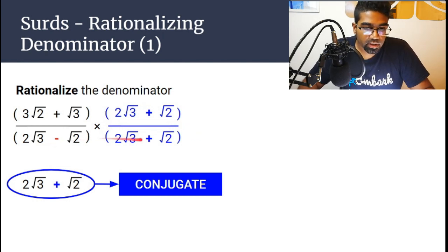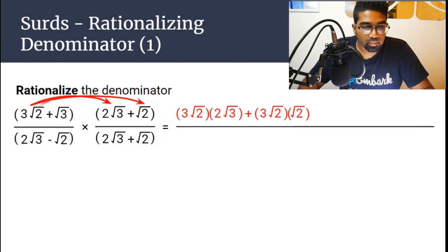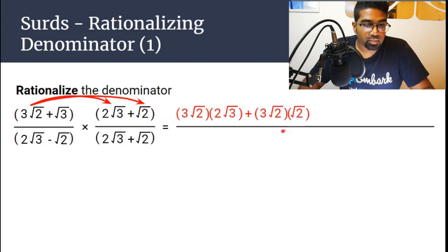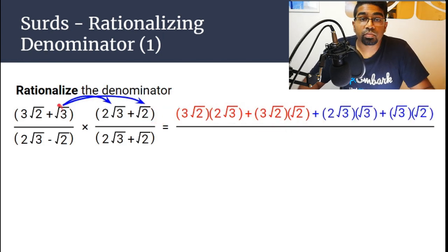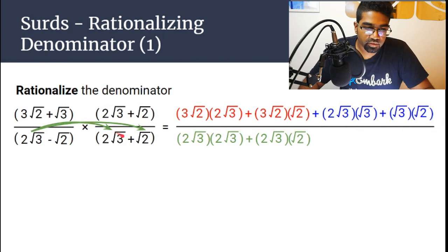After we do this, it's time to expand. This is normal expansion — take the first term and multiply by both terms in the other bracket. So √3 multiplied by 2√3, and √3 multiplied by √2 for the first set. Then do the same for the denominator systematically, so we're less likely to make mistakes.